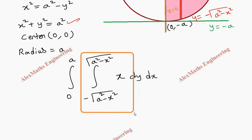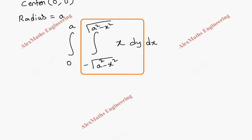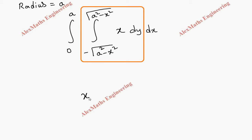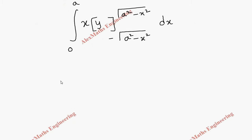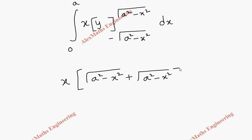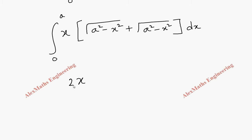First we evaluate with respect to y. Since x is a constant, x stays as is, and the integration of dy is y. Substituting the limits from minus root of a squared minus x squared to root of a squared minus x squared, we get: root of a squared minus x squared minus (minus root of a squared minus x squared), which becomes 2 times root of a squared minus x squared, integrated from 0 to a with respect to x.